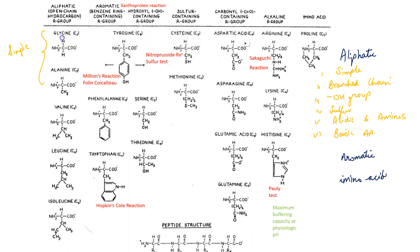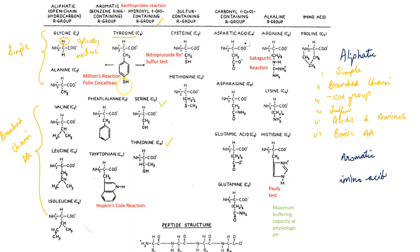Simple amino acids are glycine and alanine. The R group of glycine is hydrogen and it is optically inactive — it is the simplest amino acid. Valine, leucine, and isoleucine are branched chain amino acids. Hydroxyl group-containing amino acids are serine and threonine. Tyrosine is also a hydroxyl group-containing amino acid, but since it is an aromatic amino acid, we will talk about it there.